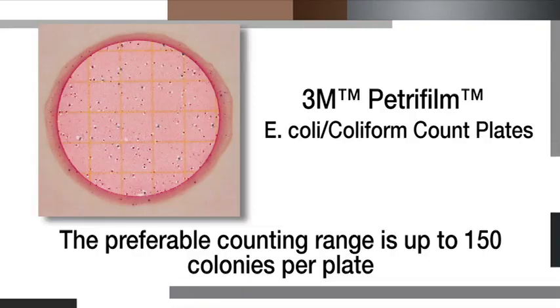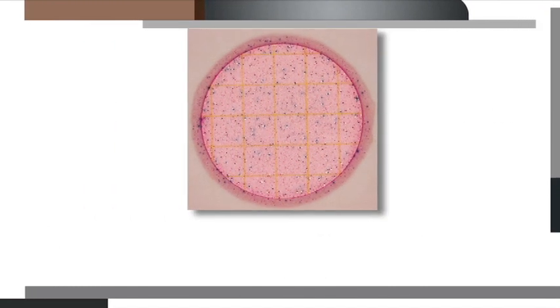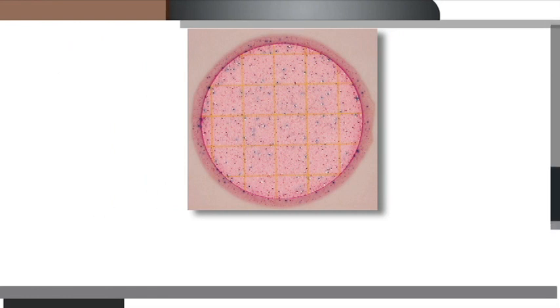The preferable counting range for the 3M PetriFilm E. coli coliform count plate is up to 150 colonies per plate. For counts over 150 colonies, you can estimate the count.